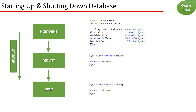In order for users to connect to a database instance, a database administrator must first start the database instance. The database instance and database go through a series of stages as they are made available for access by users. These stages are: starting the database instance, mounting the database, and opening the database.